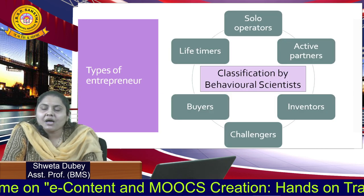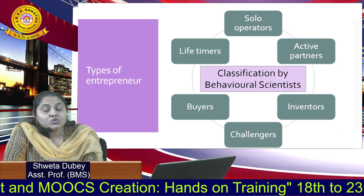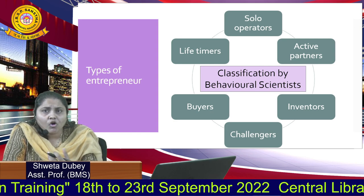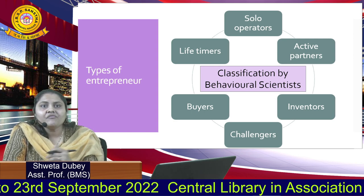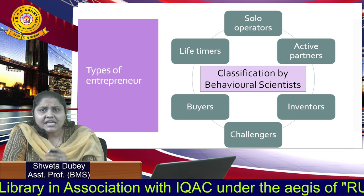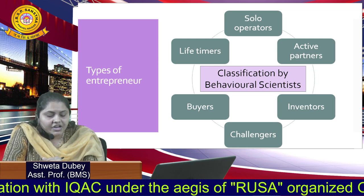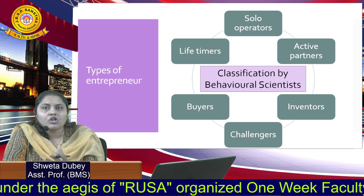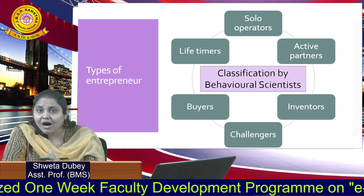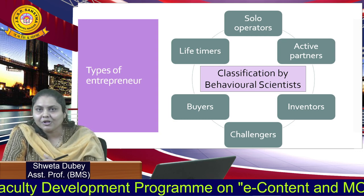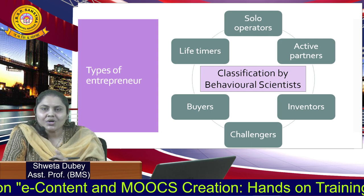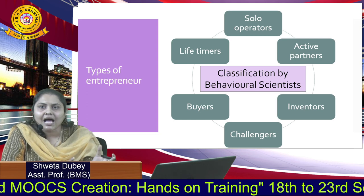Next, we have the classification by behavioral scientists. According to this, we classify entrepreneurs on the basis of ownership. We have a solo operator — a person who is the sole proprietor of a business, and the whole business lies in his hands. Then we have active partners — someone who is in collaboration with another person when starting a business. Then we have inventors — someone who will come up with new technology and concentrate on the creative aspects. Next, we have challengers — someone who will look at the challenges the society presents, come up with options and innovations, and present them to people. And then we have buyers — someone who will do the job of buying and acquiring a business, such as a person with money who goes for a setup business and buys it to become the owner.